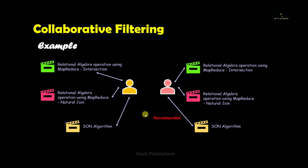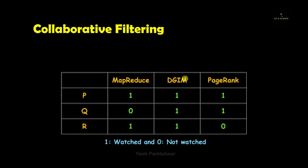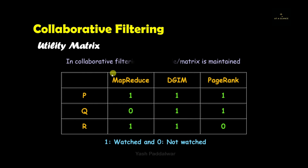I hope this example has cleared all your doubts. This is collaborative filtering based recommendation system. Now we will see the utility matrix concept that collaborative filtering uses for recommending products based on similar users' choices.